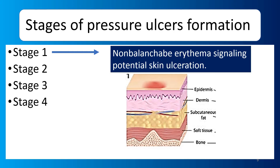Now we will go to the stages of pressure ulcer formation. There are 4 stages. Stage 1 is non-blanchable erythema. Erythema means redness of the skin. The skin is reddened but not yet damaged — this is signalling potential skin ulceration. You can see a slight redness of the skin. The damage is only at the superficial epidermal layer.